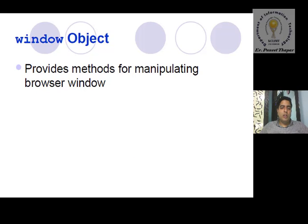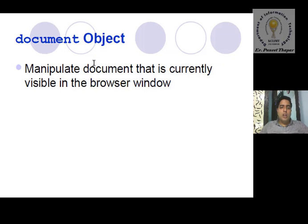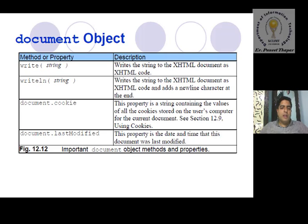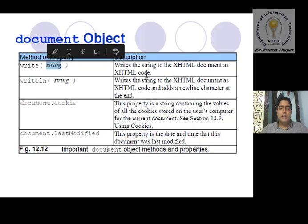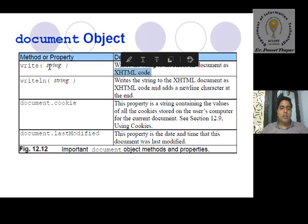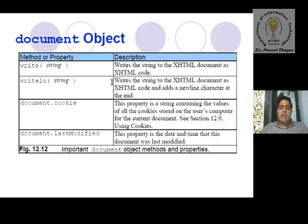For what is currently displayed on the browser window, we use the document object. To manipulate or edit whatever is visible on the browser window, we use document object methods. There are four types: first is write — it writes a string to the HTML document as code. write() writes a string to the xHTML document as XML code. writeln() does the same but automatically adds a new line character at the end, so if we use writeln twice, each output appears on a separate line.